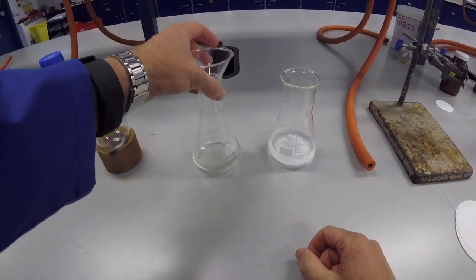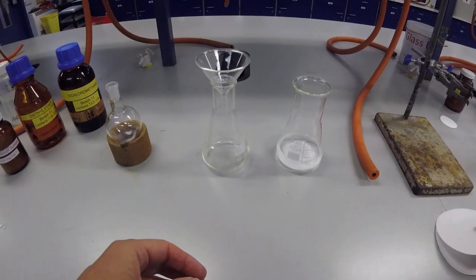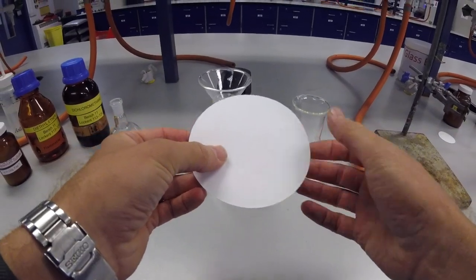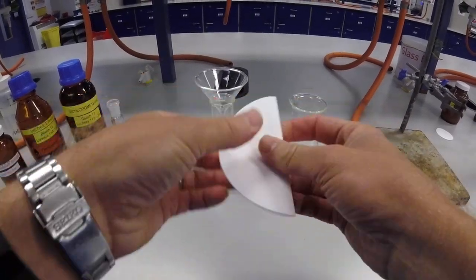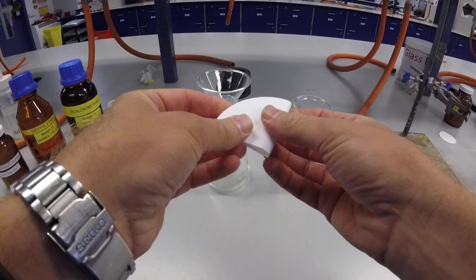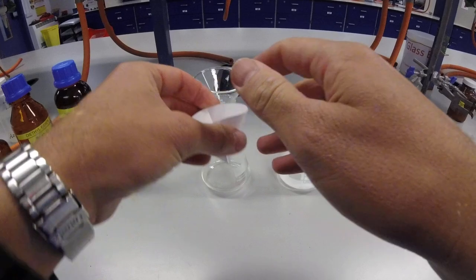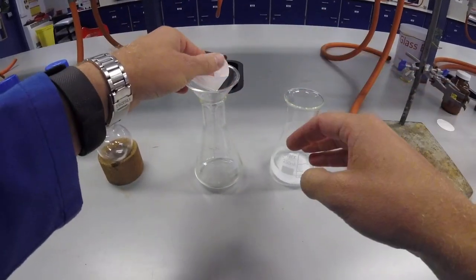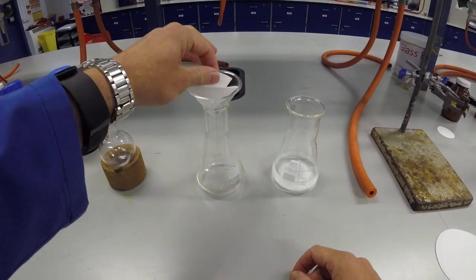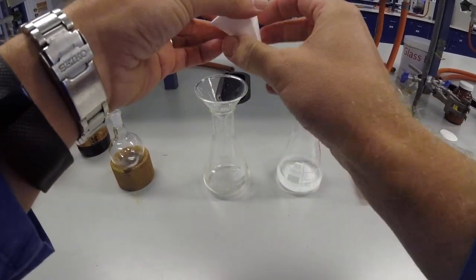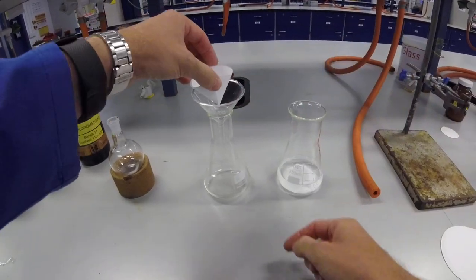So you just need a conical flask and a filter funnel. Now, people can be very lazy about this and attempt to just simply fold the filter paper in half and then half again and then try and open it out and drop that in the funnel and then pour. The problem with this is that the surface area of the filter paper is actually comparatively small. It's just the outside area there.